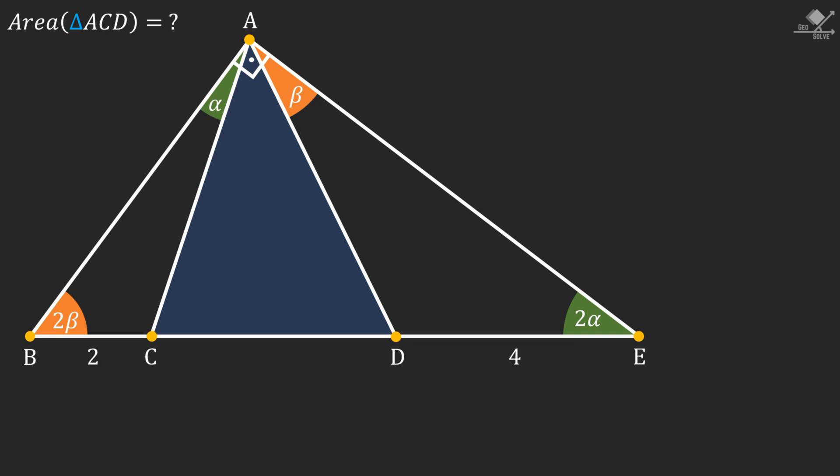First let's focus on the large triangle and write down the sum of internal angles. So we will have 2α + 2β + 90 = 180. This will give us α + β = 45 degrees.